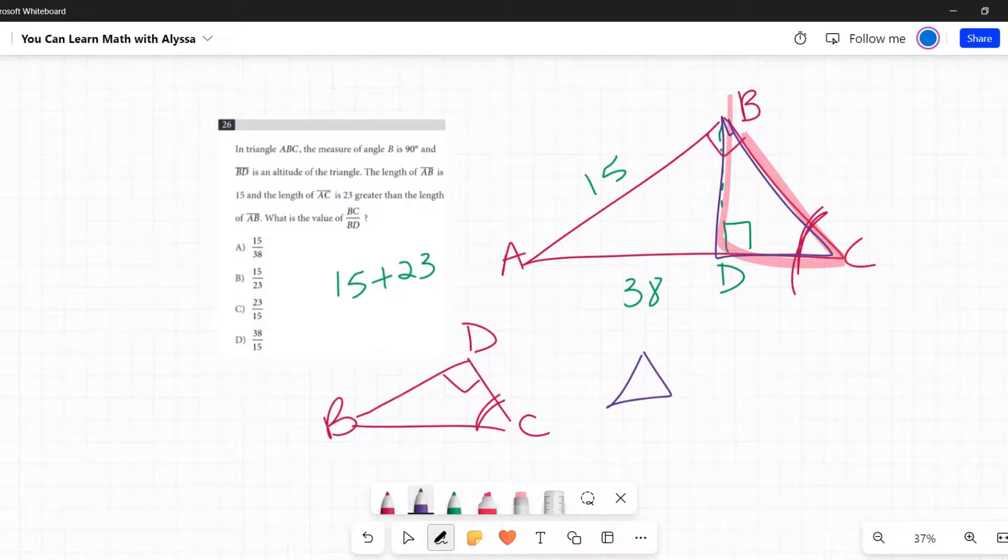So triangle bottom left corner to right angle to shared angle C is ABC. It is similar to triangle bottom left corner to right angle to shared angle C, BDC.